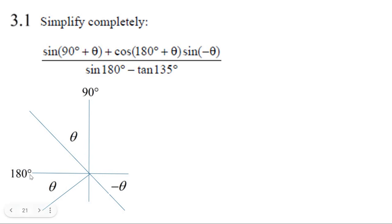180 plus theta, 180, there's plus theta, that's the third quadrant. Cosine is going to be negative there, so that's going to become minus cosine theta.